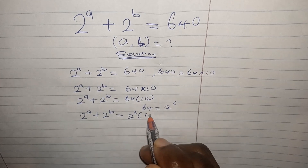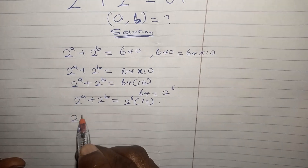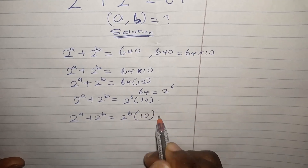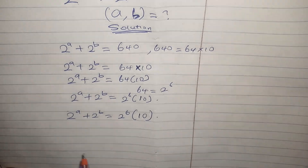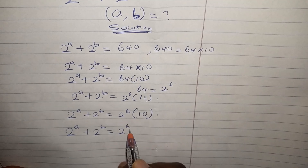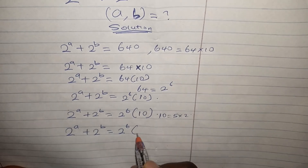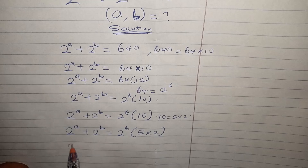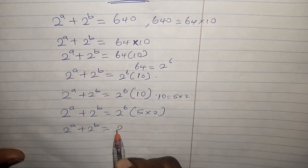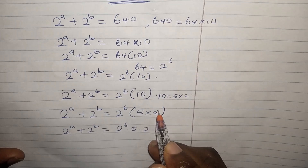So we have 2^a + 2^b = 2^6 × 10. Now, 10 is equal to 5 times 2, and 2 is also equal to 2 to the power of 1. According to the principle of indices, if you have the same base, we add the powers: a^B × a^C = a^(B+C). So 2^6 × 2^1 gives us 2^7, and we have 2^a + 2^b = 2^7 × 5.